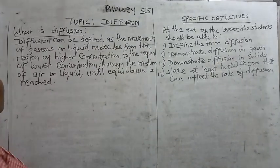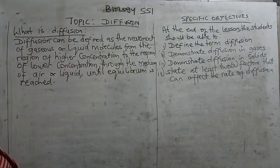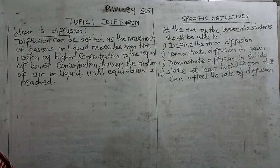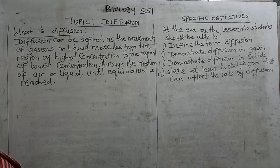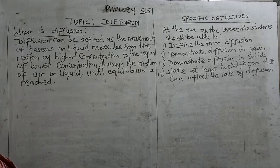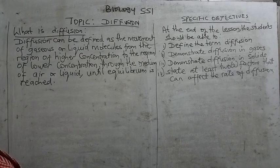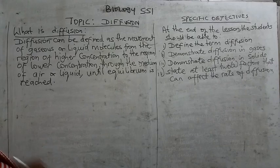So what is diffusion? Diffusion can be defined as the movement of gaseous or liquid molecules from a region of higher concentration to a region of lower concentration, through the medium of air or liquid, until equilibrium is reached.